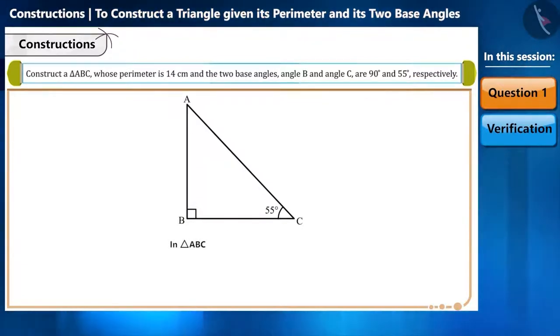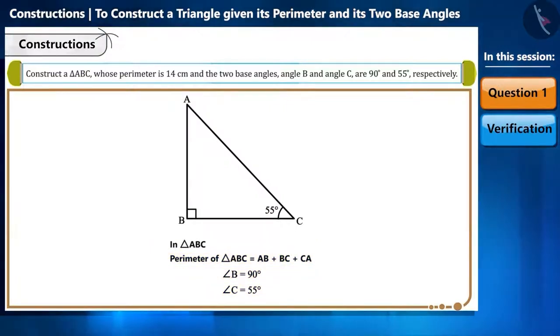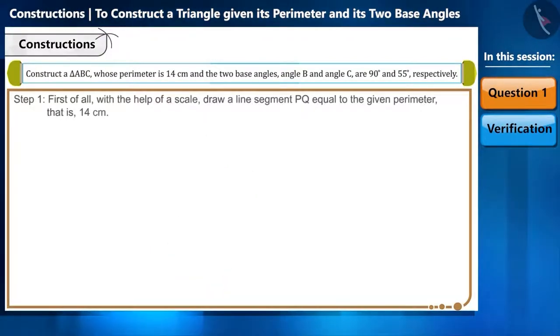In the question the perimeter of the triangle is given to be 14 centimeter, and we know that the perimeter of a triangle equals the sum of its sides. Hence we have AB plus BC plus CA equals 14 centimeter. Angle B equals 90 degrees and angle C is 55 degrees. According to the given information we will construct the triangle by following these steps.